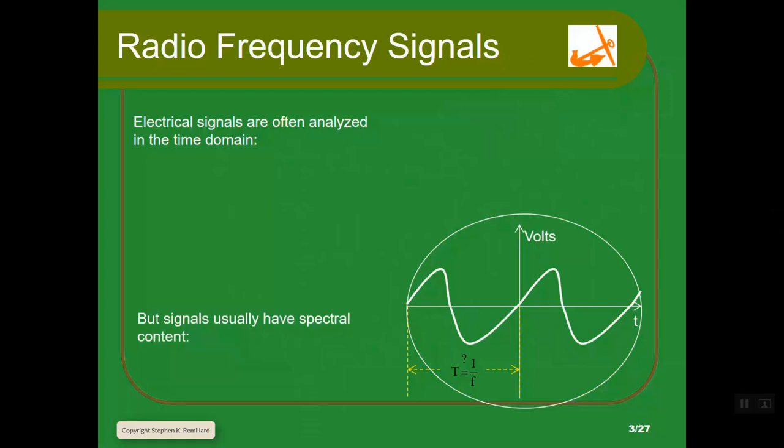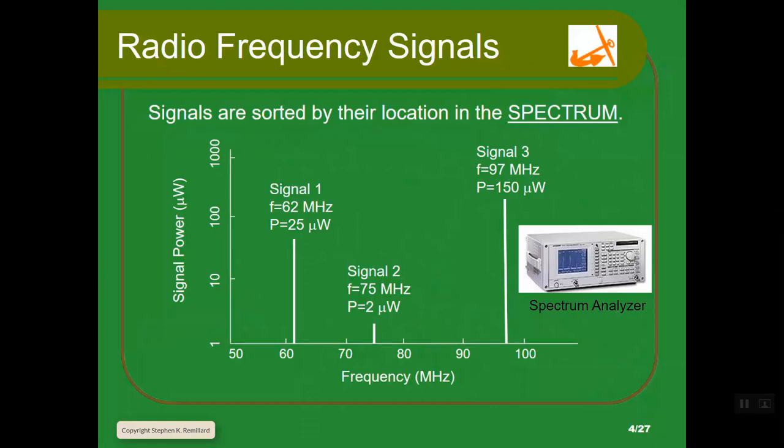You might look at a radio frequency with a spectrum analyzer. Here's just some made up spectrum of a signal that has components at these three frequencies: 62, 75, 97 megahertz, with different power levels. The power level is always plotted logarithmically because it covers several orders of magnitude. The frequency axis is horizontal and the power or voltage squared axis is vertical.